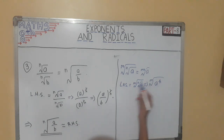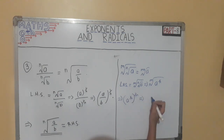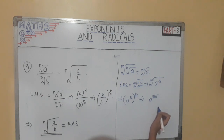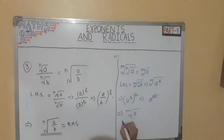After that, we can write root m as a raised to 1 by n whole raised to 1 by m. By multiplication of powers, we will get a raised to 1 by mn. Since 1 by mn can be written as mn root of a, therefore LHS is equal to RHS.